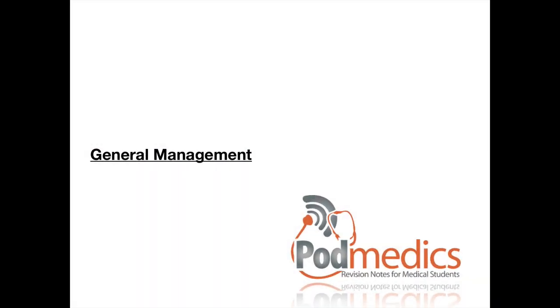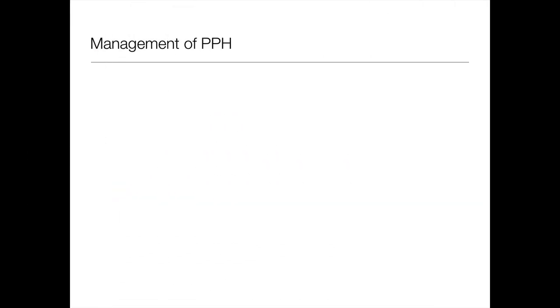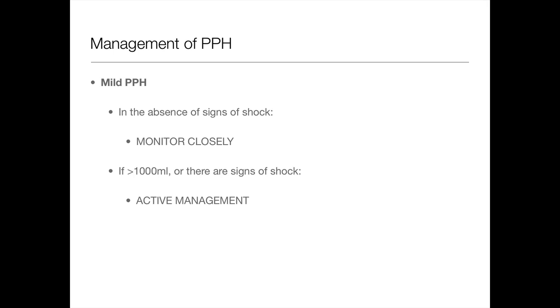So let's move on to the management. Let's start just by talking a little bit about the general management. So if there's mild PPH, so you think there's a bit of blood loss, obviously you're not going to measure it all, but in the absence of signs of shock, all you do is monitor closely. 500 milliliters is not going to do that much. These women have got an increase in their blood volume anyway, because that's one of the things that prepares you for pregnancy. So all you do is just assess the vital signs, start some fluids, and just monitor closely. If it's greater than a thousand and there are signs of shock, then you need to start active management.